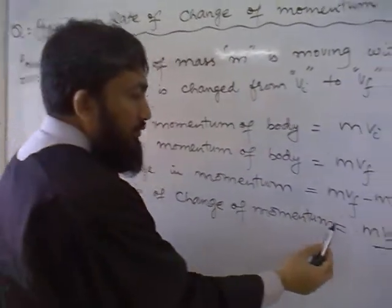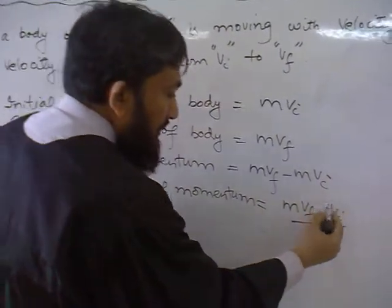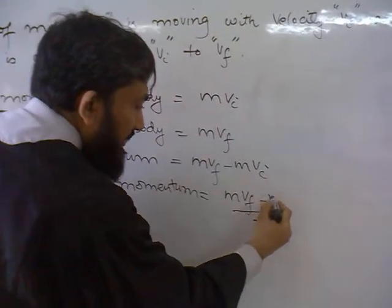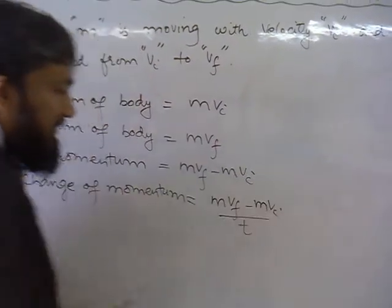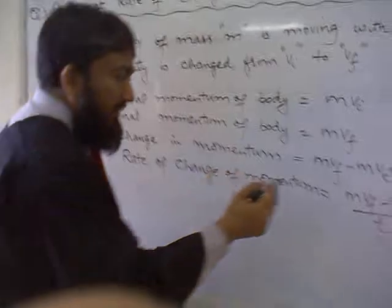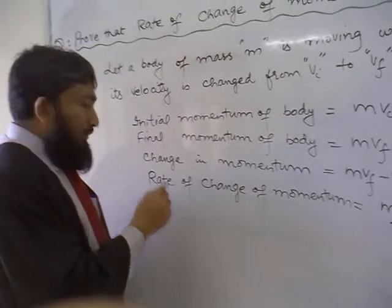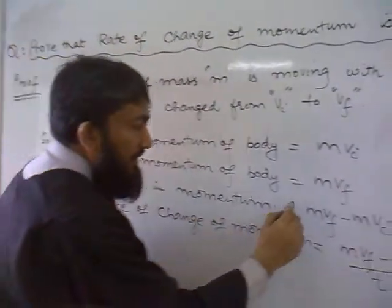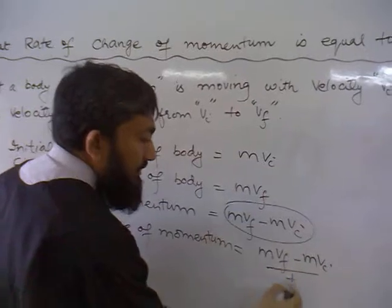And rate of change of momentum is equal to m v_f minus m v_i divided by t. You are going to calculate rate. So, you divide this value by time.